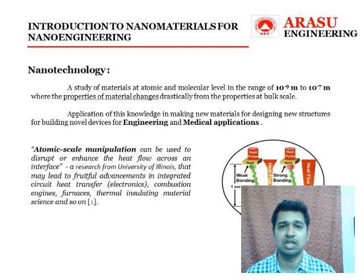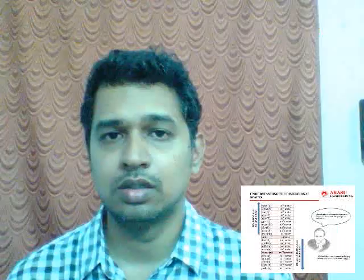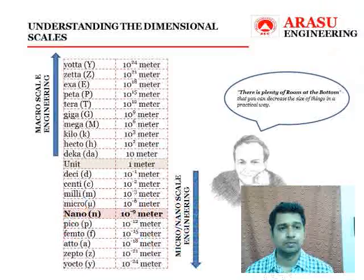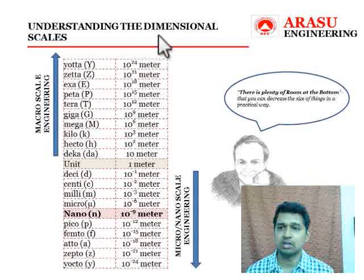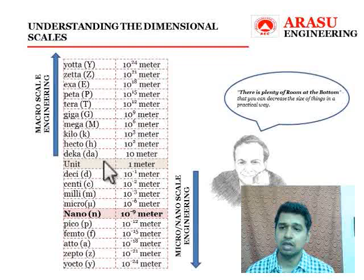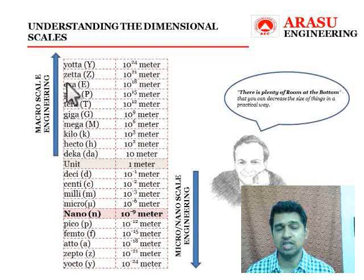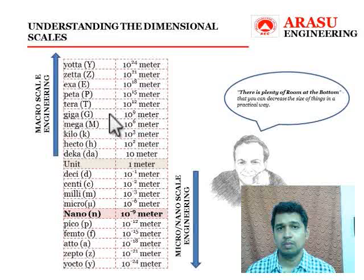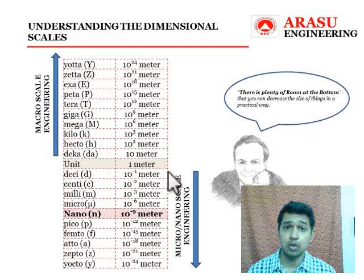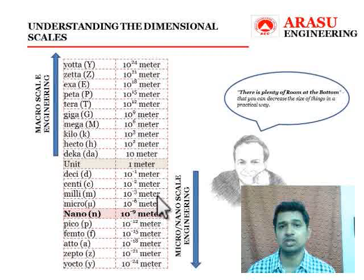It is mandatory for anyone to know what is a nanoscale. If we look at the table, we have completely defined dimensional scales, with one meter as the base unit. Above the base unit, we have higher order scales — deca, hecto, kilo, mega, giga, tera — which we usually deal with in conventional engineering. Below the base unit, we have lower order dimensional scales, and nano falls in these lower order scales starting with desi, centi, milli, micro, and nano.